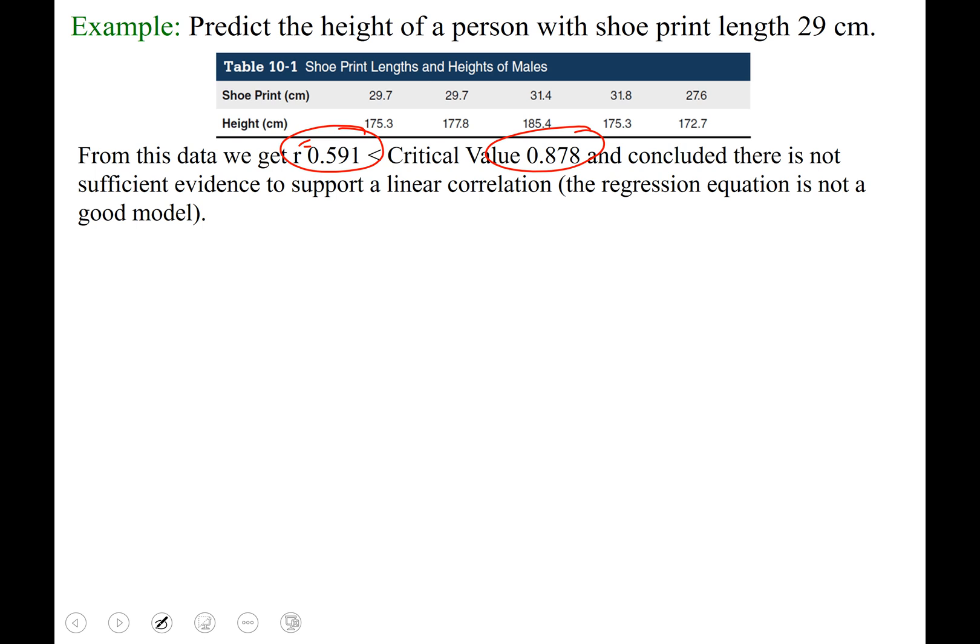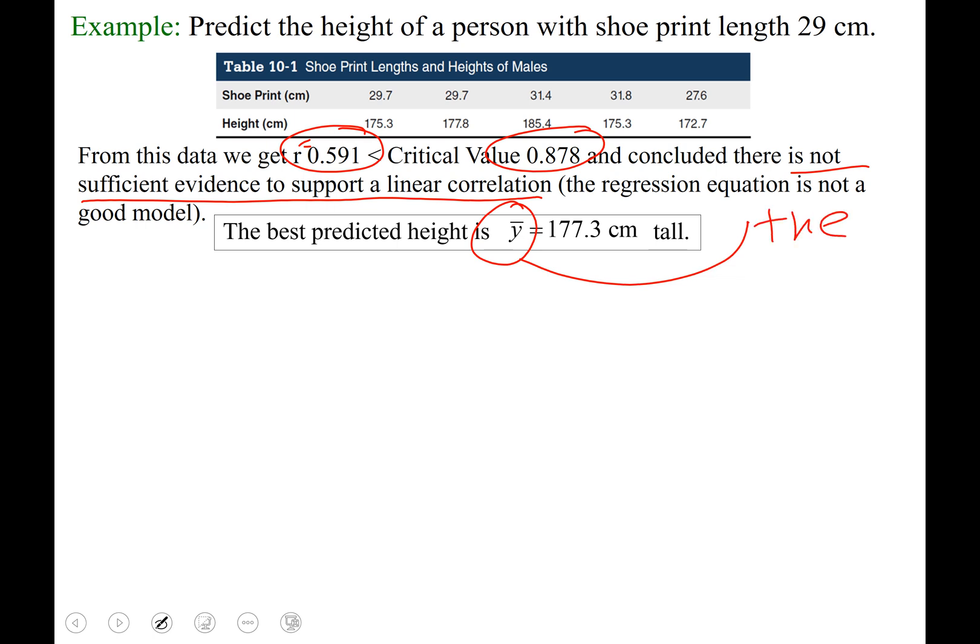We concluded that there is not sufficient evidence to support a linear correlation, and what that means is the regression equation is not a good model. Therefore, we will use y bar, which is the mean, to make our prediction. We were asked to predict the height of a person with a shoe print length of 29 centimeters. We're just going to use the average height of our samples, which is 177.3 centimeters tall.